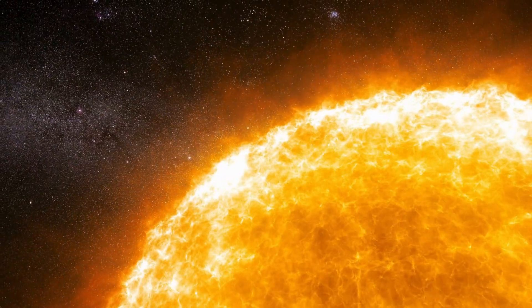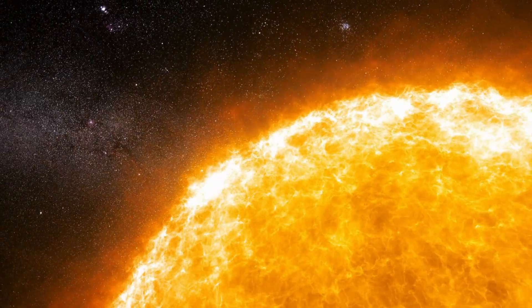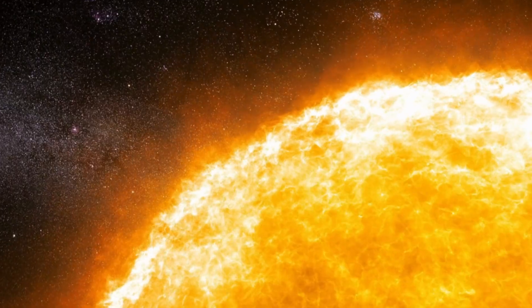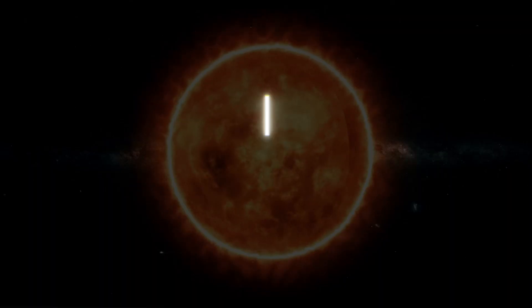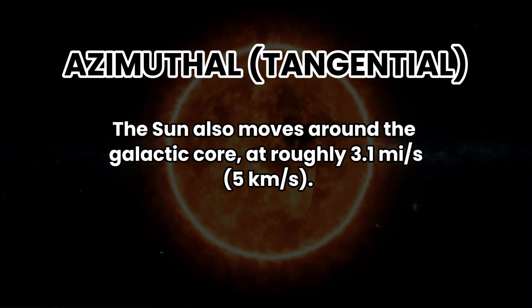That voyage isn't a simple lap. It blends three motions at once. Radial drift, approximately 5 miles per second, 8 kilometers per second, toward or away from the center. Azimuthal, tangential, approximately 3.1 miles per second, 5 kilometers per second, around the core.